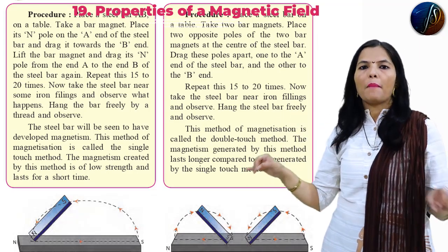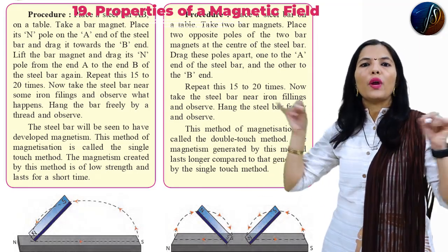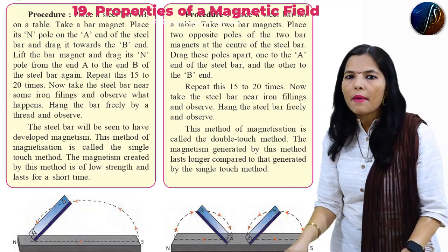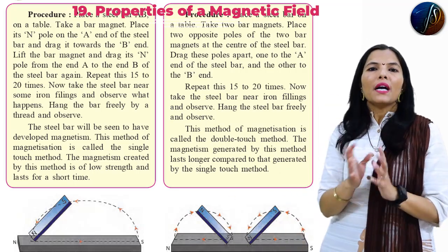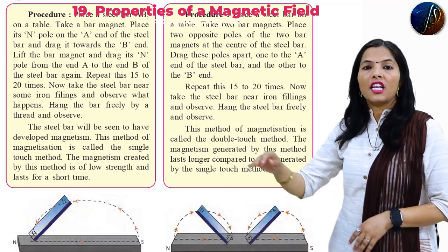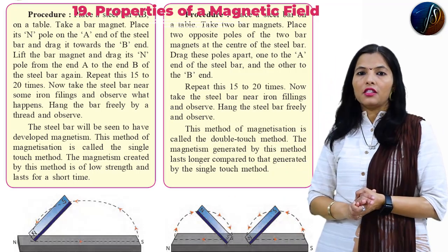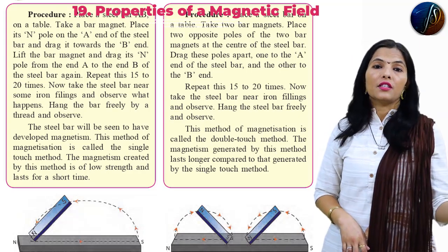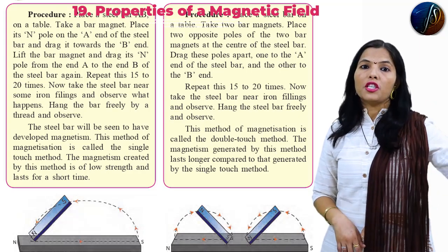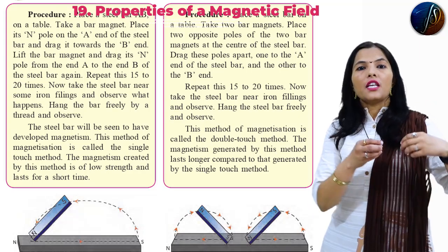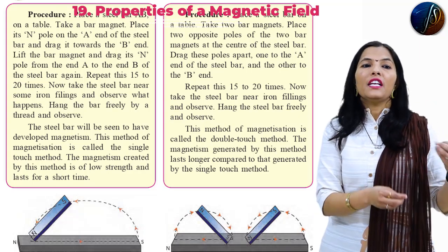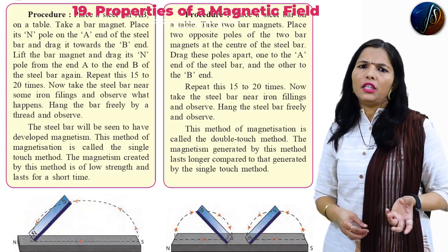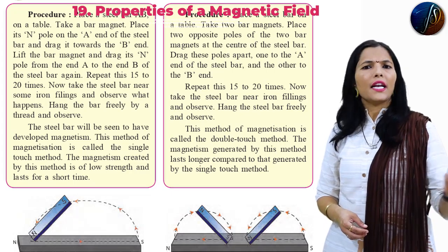With the double touch method, after dragging 15 to 20 times, the magnetism produced in the steel bar lasts for a longer duration, as compared to the single touch method where the iron filings attracted to the steel bar only stay attracted for a short period of time.